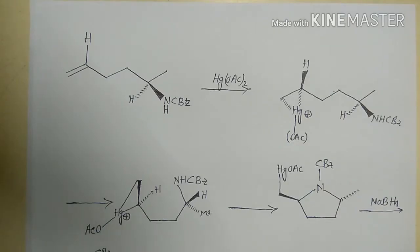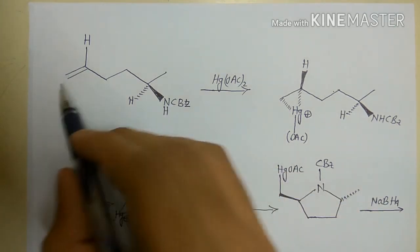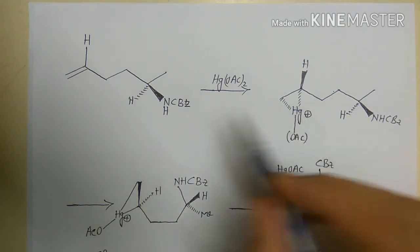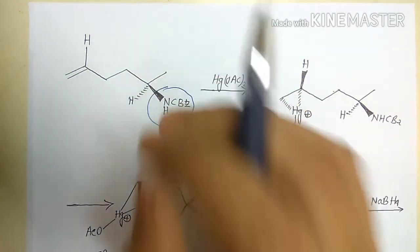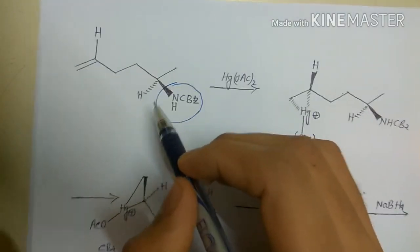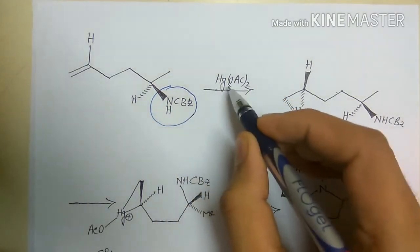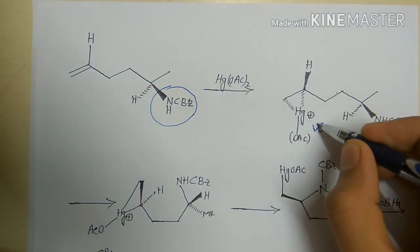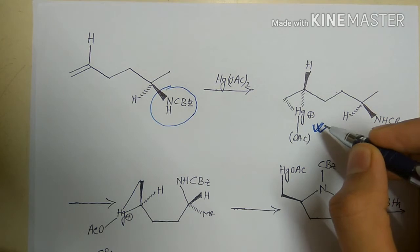We first consider the oxymercuration reaction of this double bond. The NHCBz group is bulky and positioned above the plane with respect to the double bond. Because this bulky NHCBz group is above the plane, mercury will attack from below the plane, generating a cyclic mercurinium cation.